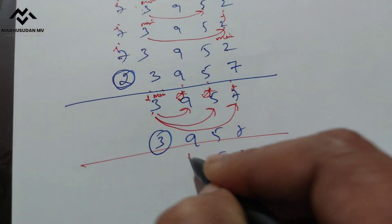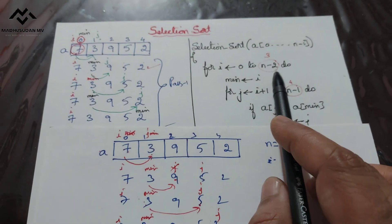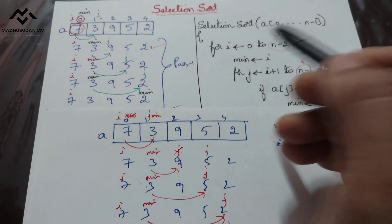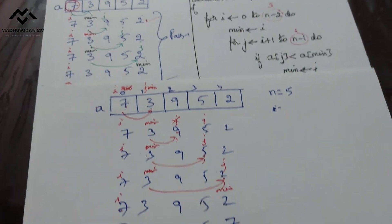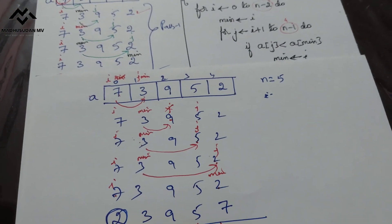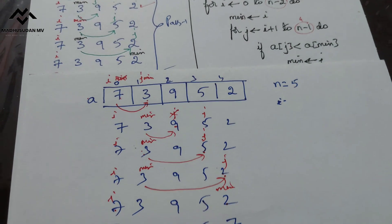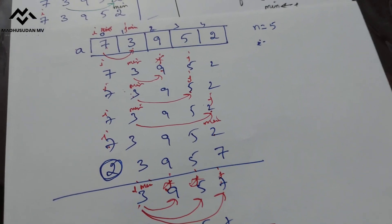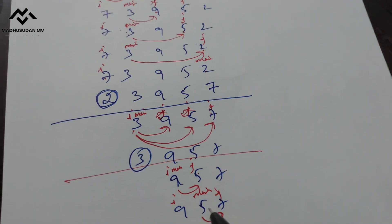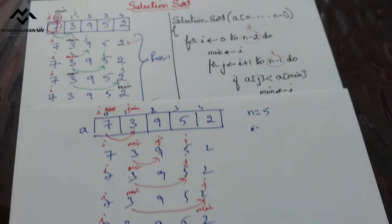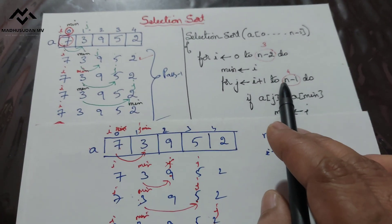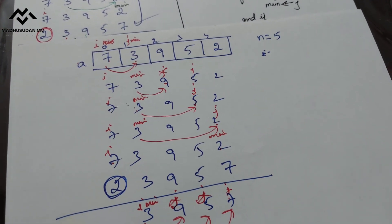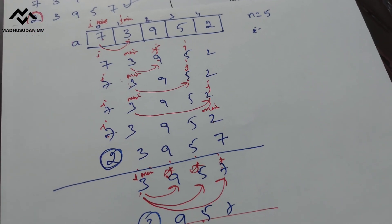Among these three elements, i increments to 2. 2 is less than or equal to 3, true. This is assigned as min. j equals i+1, pointing to the next. a[j] is less than a[min], true — assign this as min. j increments; condition false, exit loop. Swap a[min] with a[i]: 5 comes here, 9 goes there. Pass 3 complete.